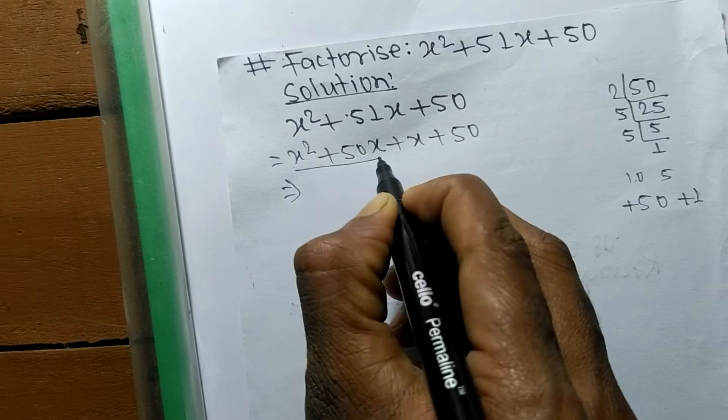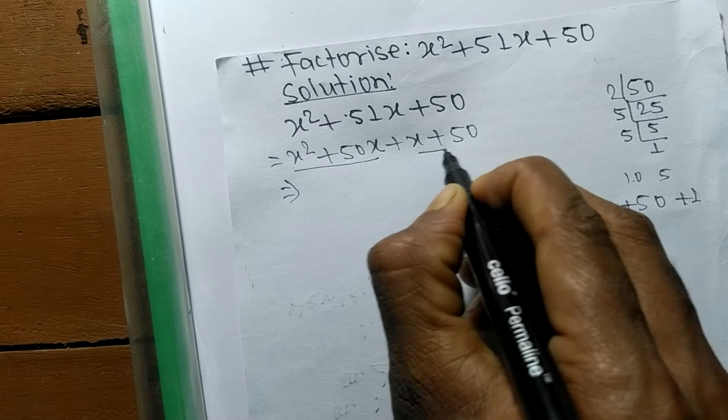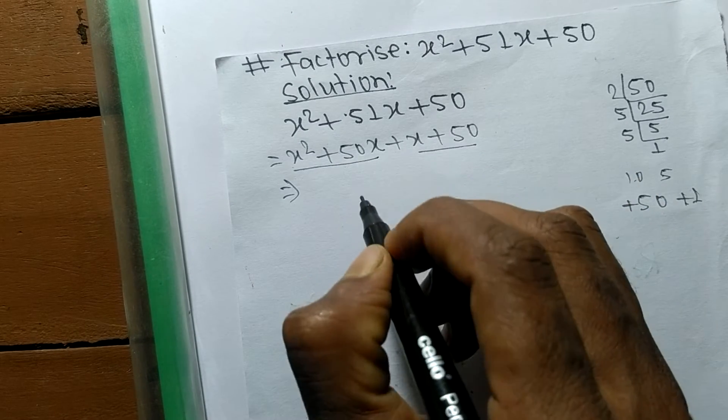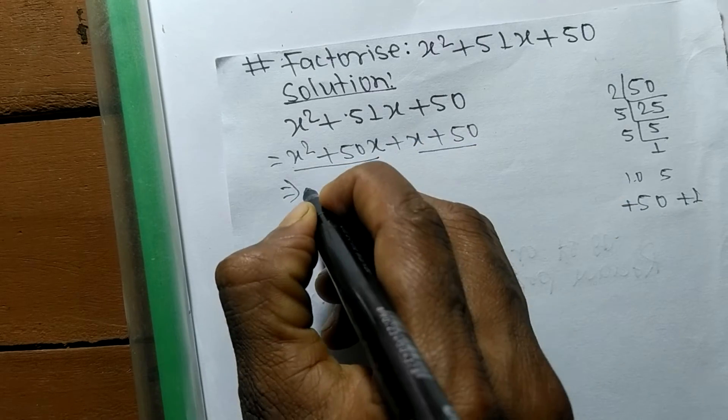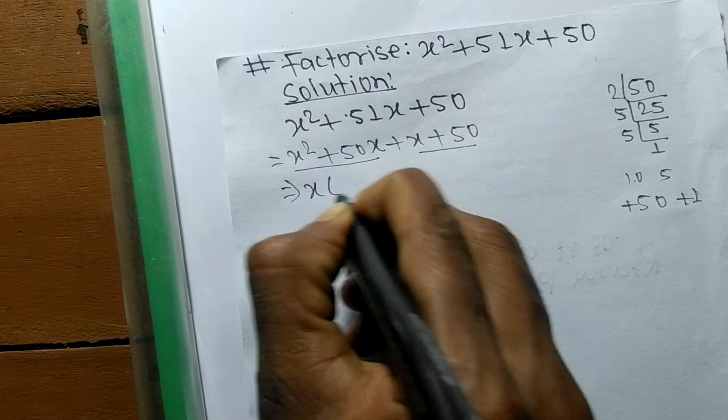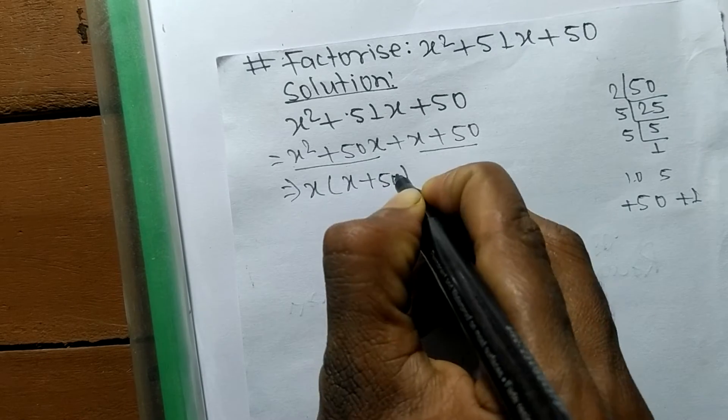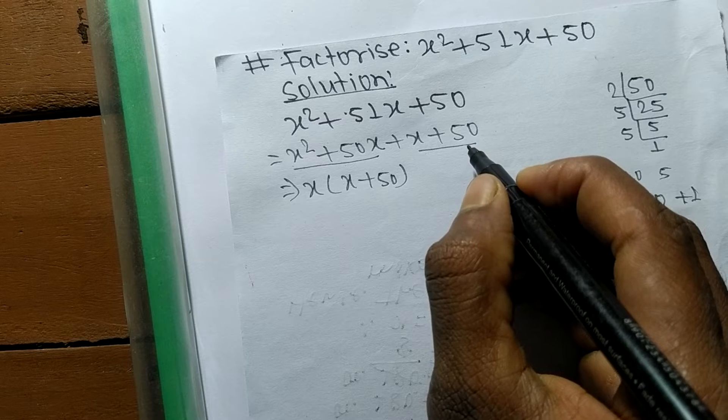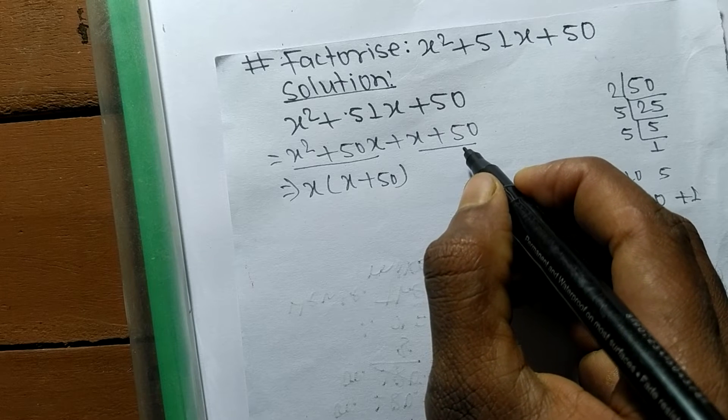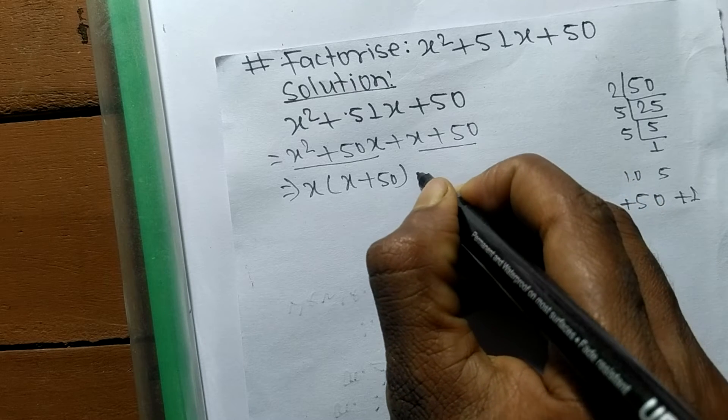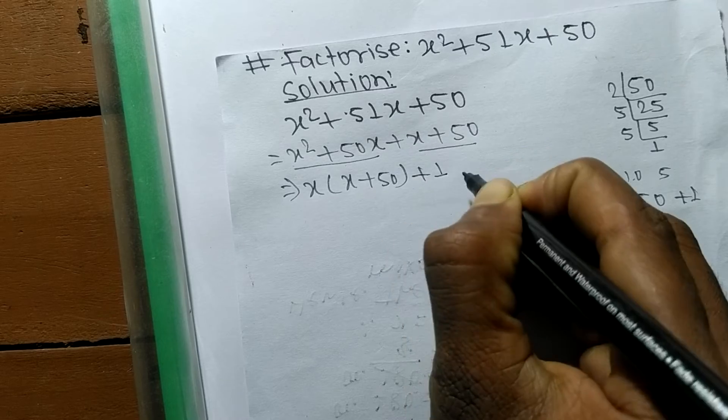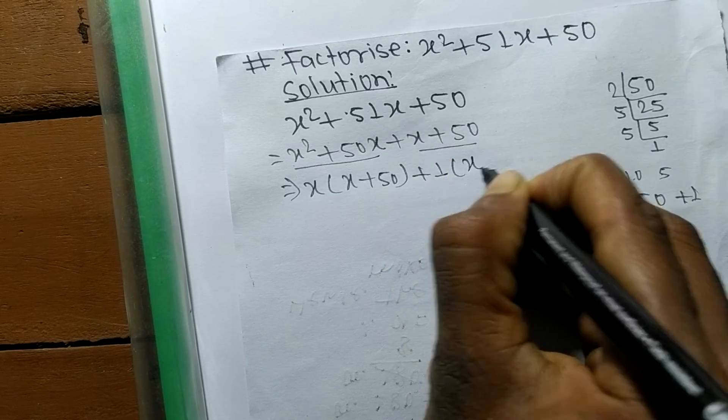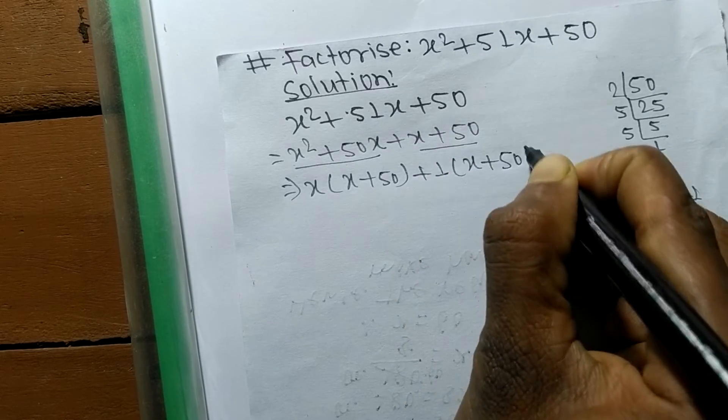From the first pair, the common factor is x, so the remaining is x + 50. In the second pair, there is no common number, so when there is no common expression, the common factor is 1, and the remaining is x + 50.